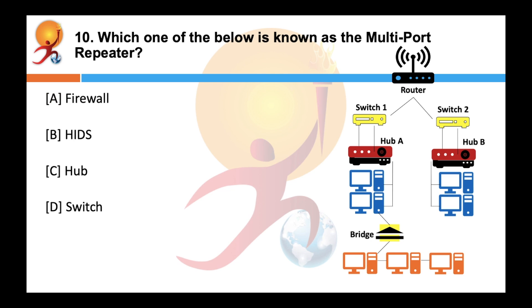Which one of the below is known as multiport repeater? Correct answer is a hub. A hub in the context of networking is a hardware device that relays communication data. A hub sends data packets to all devices on a network.